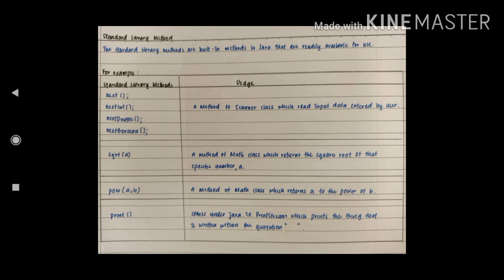Next is sqrt inside bracket a, that is a method of Math class which returns the square root of that specific number a. Next is power inside bracket a and b, that is a method of Math class which returns a to the power of b.